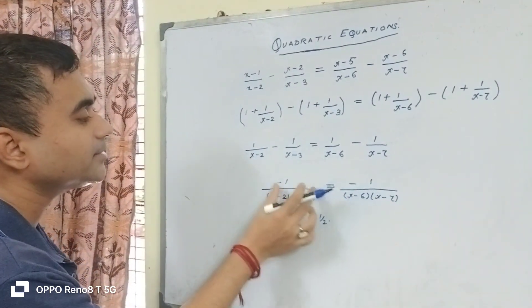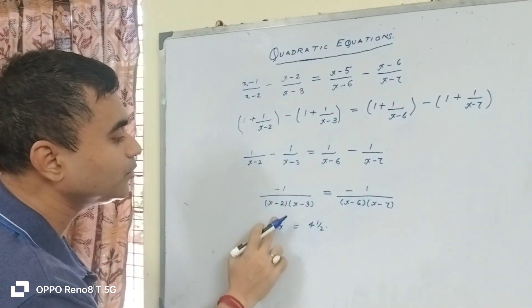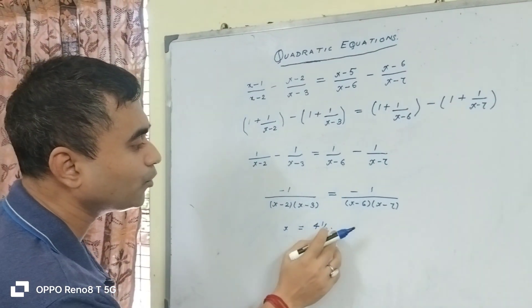You interchange the denominator with the numerator. You will be left with x equals 4 and a half.